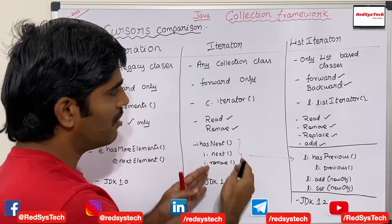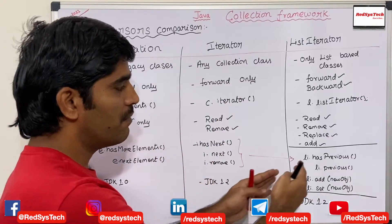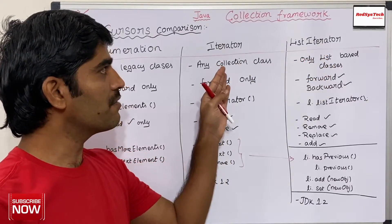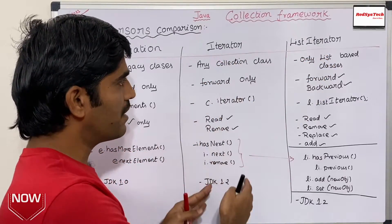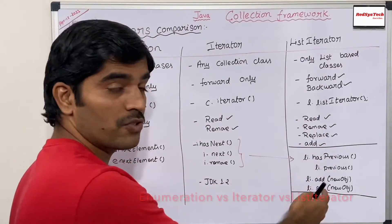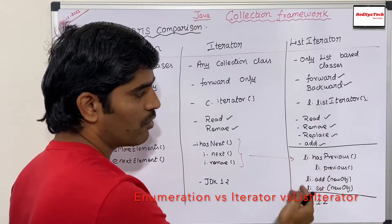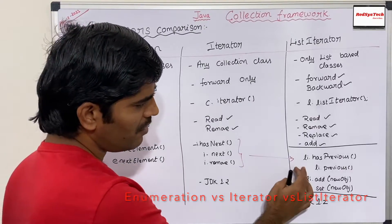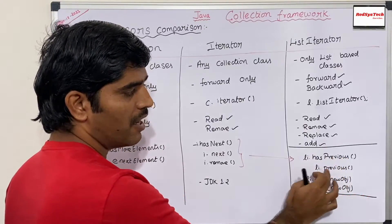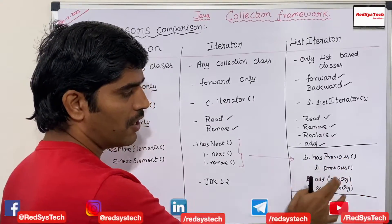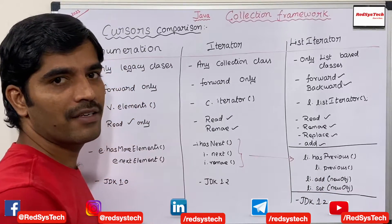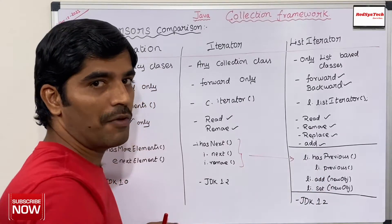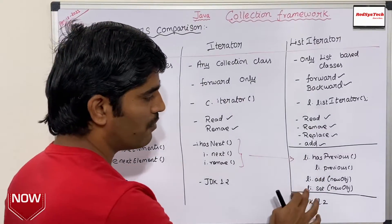All the methods present in Iterator will also be there in ListIterator, because ListIterator is actually a child interface of Iterator. So whatever Iterator has, ListIterator also has. Along with that, it has some additional methods to navigate in the backward direction using previous(). You can also add and replace elements — if I want to add a new element, I can use add(), and if I want to replace an element, I can use set().